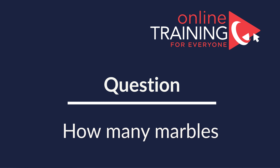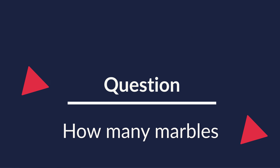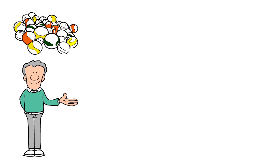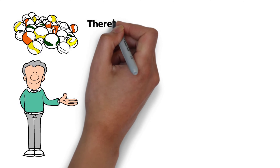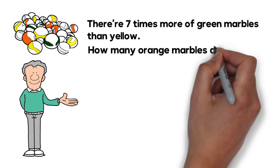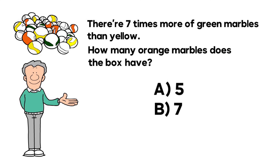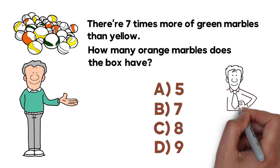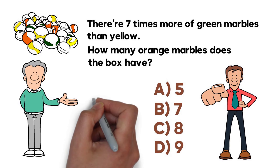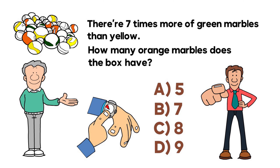Here's a cool problem which is easy to understand but might be a little tricky to solve. A box has 15 marbles of green, yellow, and orange colors. There are seven times more green marbles than yellow marbles. How many orange marbles does the box have? Choices are: A) 5, B) 7, C) 8, D) 9. Give yourself 10 to 15 seconds to see if you can come up with the solution.